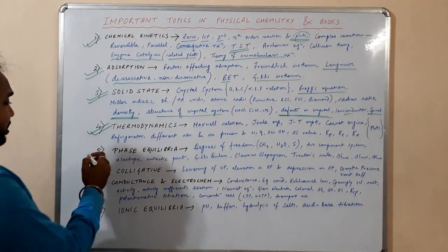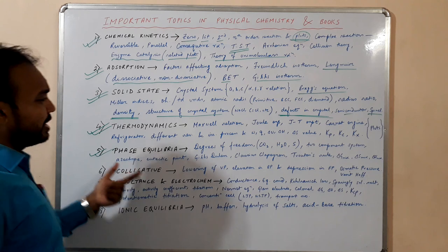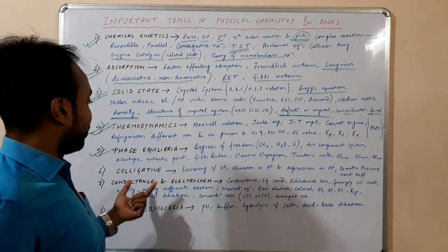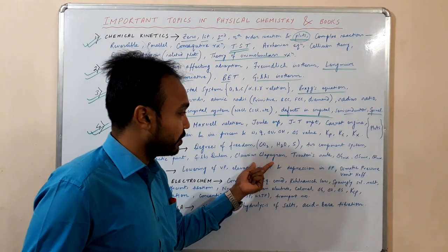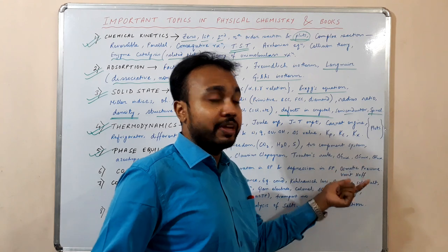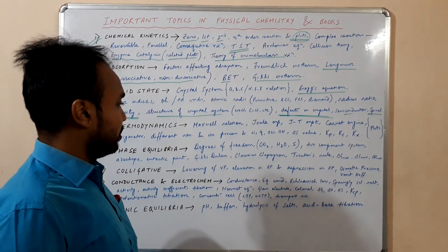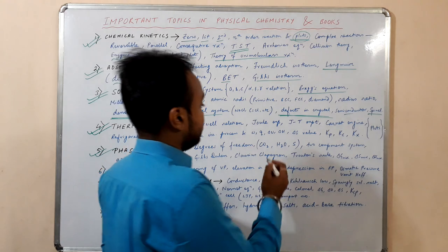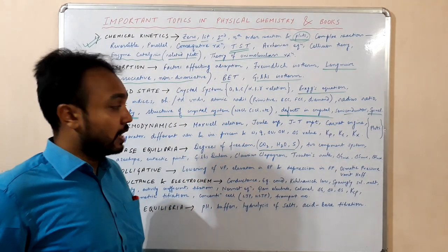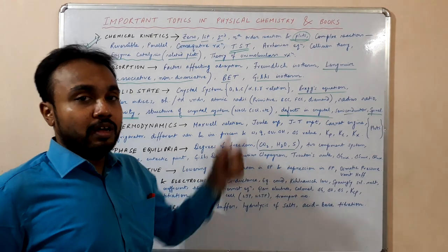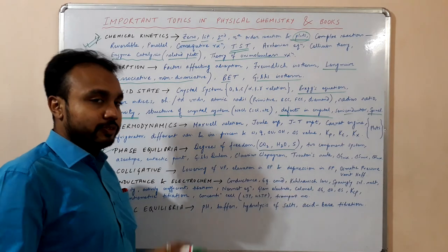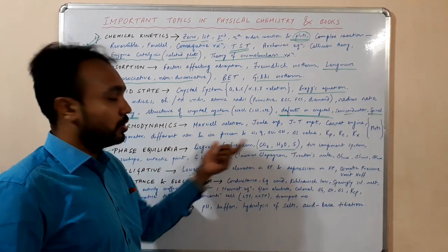Next comes phase equilibria. Generally questions come from degrees of freedom, or from the Clausius-Clapeyron equation, or from enthalpy, entropy, or free energy of mixing. Also questions come from the phase diagrams of carbon dioxide, water, and sulphur. I will make a video on phase equilibria afterwards which will contain these topics.